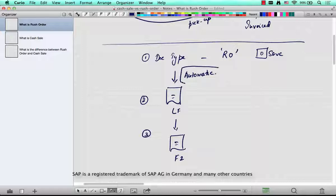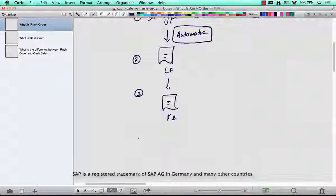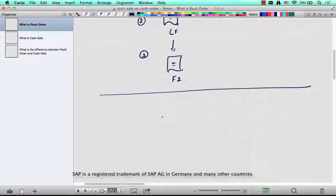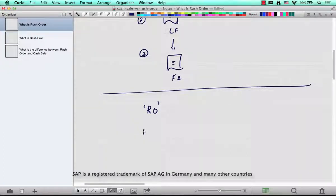that this process is automatic. What is the configuration that makes this automatic? In the sales document type RO, there is a flag called 'immediate delivery'. If you set this flag on